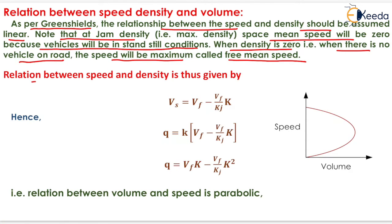The relation between speed and density is given by Vs equals Vf minus Vf upon Kj into K, where Vf is the free mean speed and Kj is the jam density. Now, if we want to determine the traffic volume, it will be equal to speed into density.